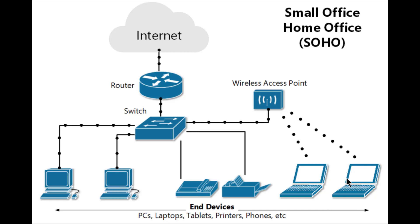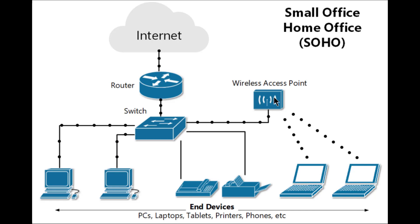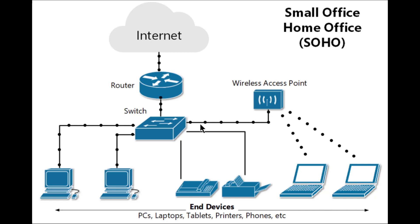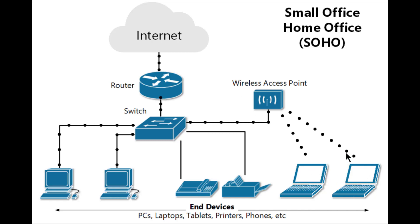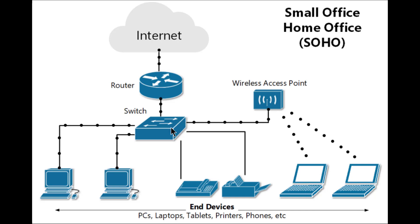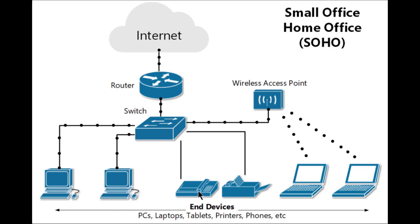So you need a wireless access point to extend the area of coverage of the local area network and increase the number of users that can be added. As you can see in this diagram, this PC and this PC can all be added to the network with the help of the wireless access point. With just a switch you have only four devices, but with the wireless access point more devices can be added to the network.